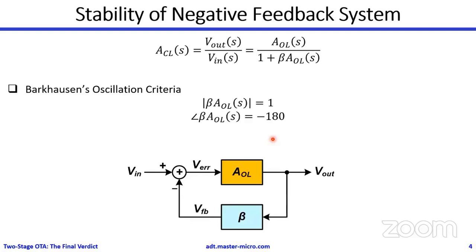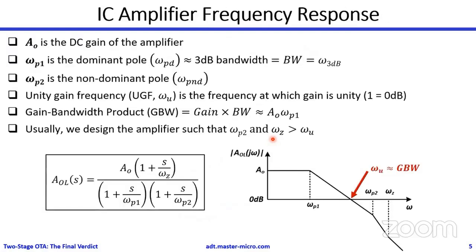The problem with negative feedback is the risk of instability. If we go around the loop and accumulate 180 degrees of phase shift through the open-loop path A and beta, the negative feedback turns into positive feedback and our amplifier becomes an oscillator. We don't want this if we are designing an amplifier. To guarantee stability, we design the frequency response to have only a single dominant pole, pushing all other poles beyond the unity gain frequency to ensure the phase shift at the 0 dB point is less than 180 degrees.